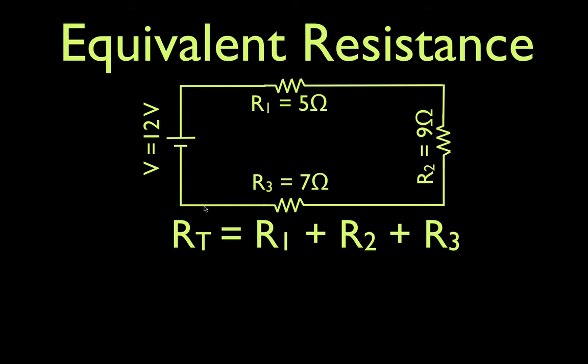The total resistance RT, the total equivalent resistance, is simply the sum of the resistance of the resistors. We have three resistors, but if we only had two, or one, or more than three, all you do is add them all up. All the ones that are in series, add them up.